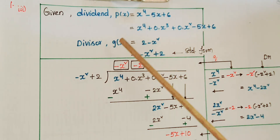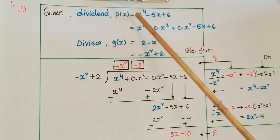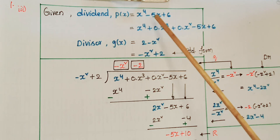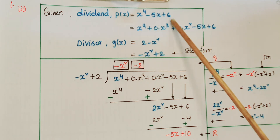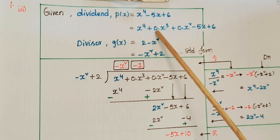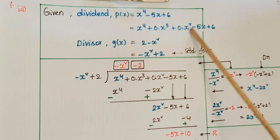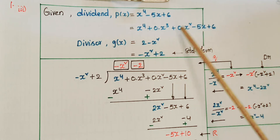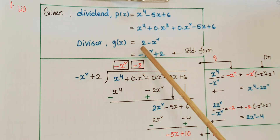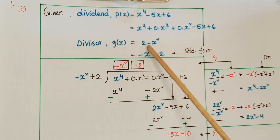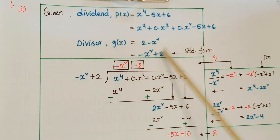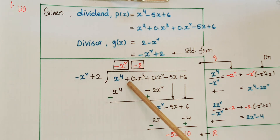The third problem: the dividend is p(x) = x⁴ - 5x + 6. There are no x³ or x² terms, so write it as x⁴ + 0·x³ + 0·x² - 5x + 6. The divisor is g(x) = 2 - x², which in standard form is -x² + 2.